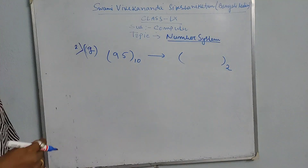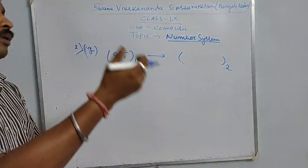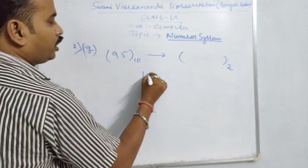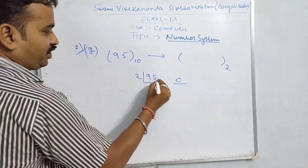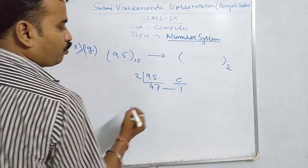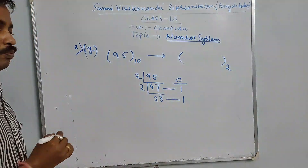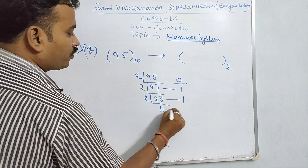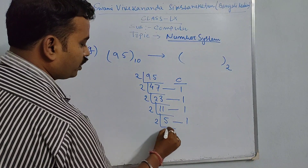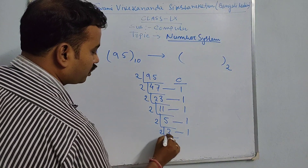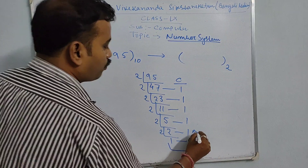In decimal to binary conversion, the procedure is to repeatedly divide by 2 and take the carry. 95 divided by 2: carry is 1. 47 divided by 2: carry is 1. 23 divided by 2: carry is 1. 11 divided by 2: carry is 1. 5 divided by 2: carry is 1. 2 divided by 2: carry is 0. 1 divided by 2 is completely divisible, carry is 0. We write the answer from bottom to top.